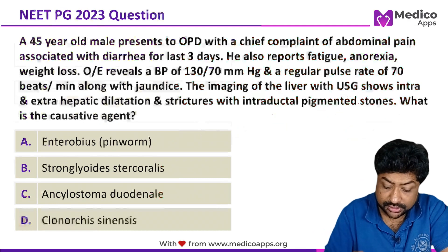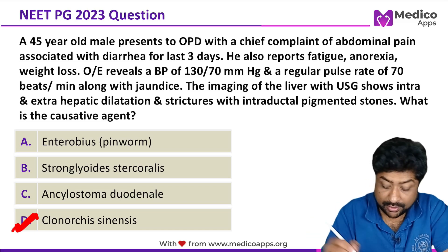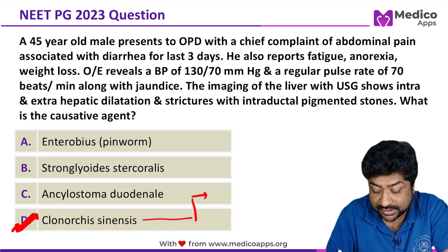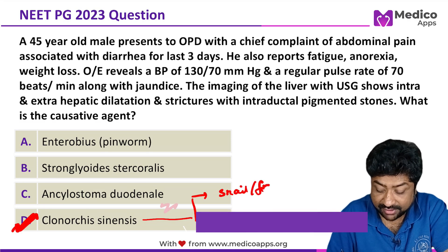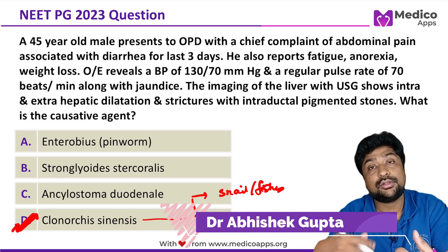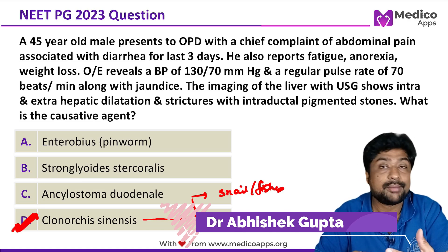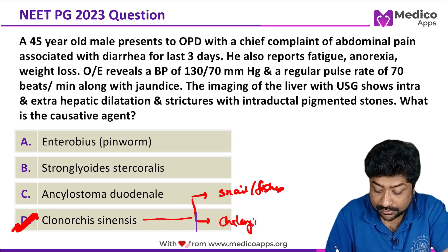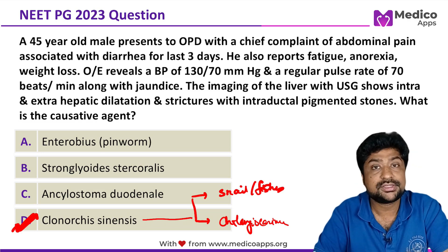So the correct answer for this clinical question is Clonorchis sinensis, also called the Chinese liver fluke. Two important points frequently asked: first, the intermediate hosts — remember, snails and fishes are the intermediate hosts. Second, the complications — bile duct stricture formation, dilatation, liver damage, liver fibrosis, and an increased incidence of cholangiocarcinoma.